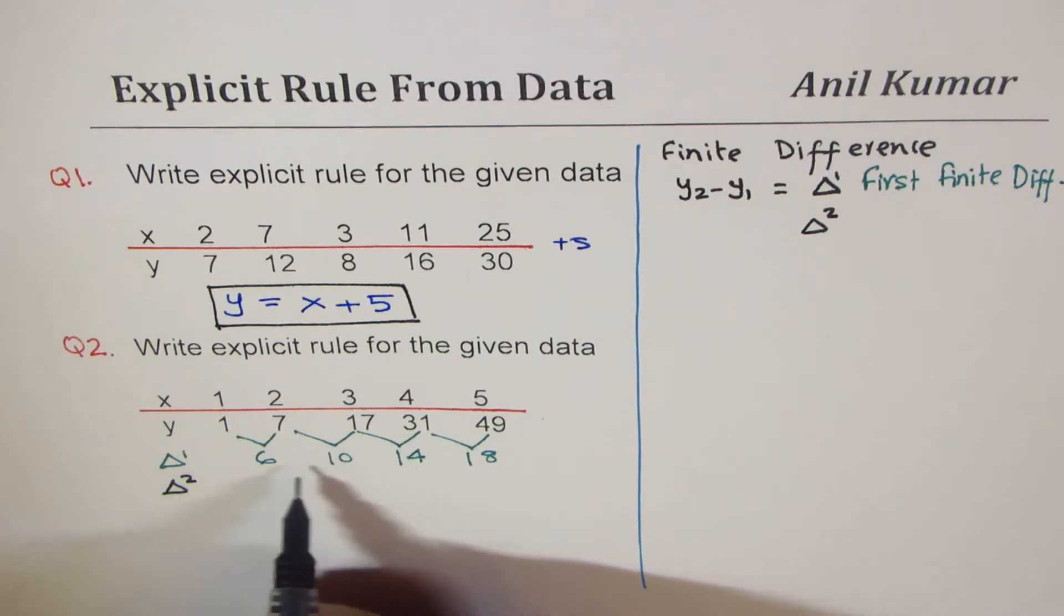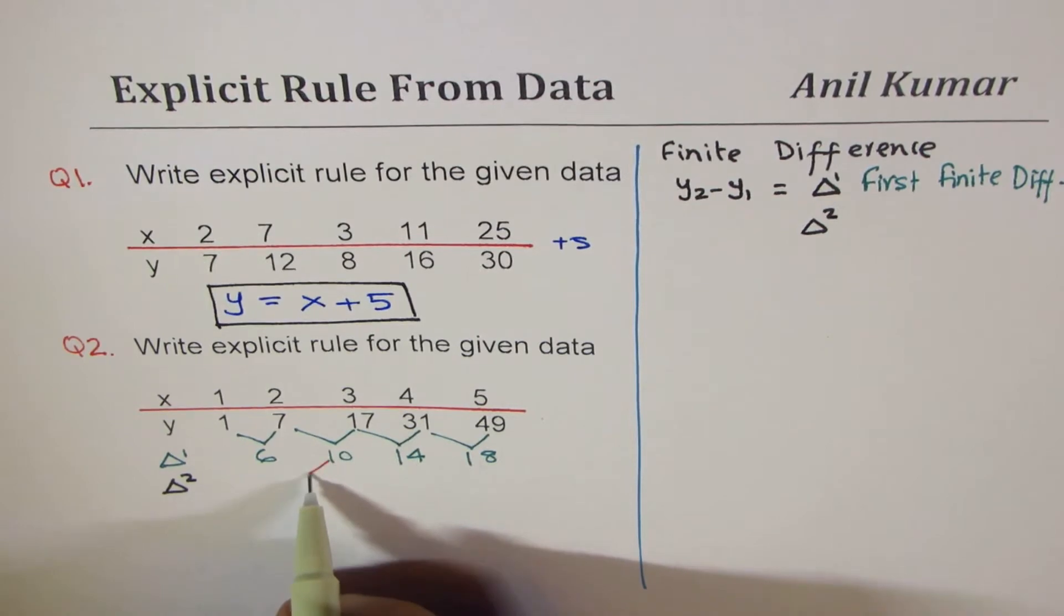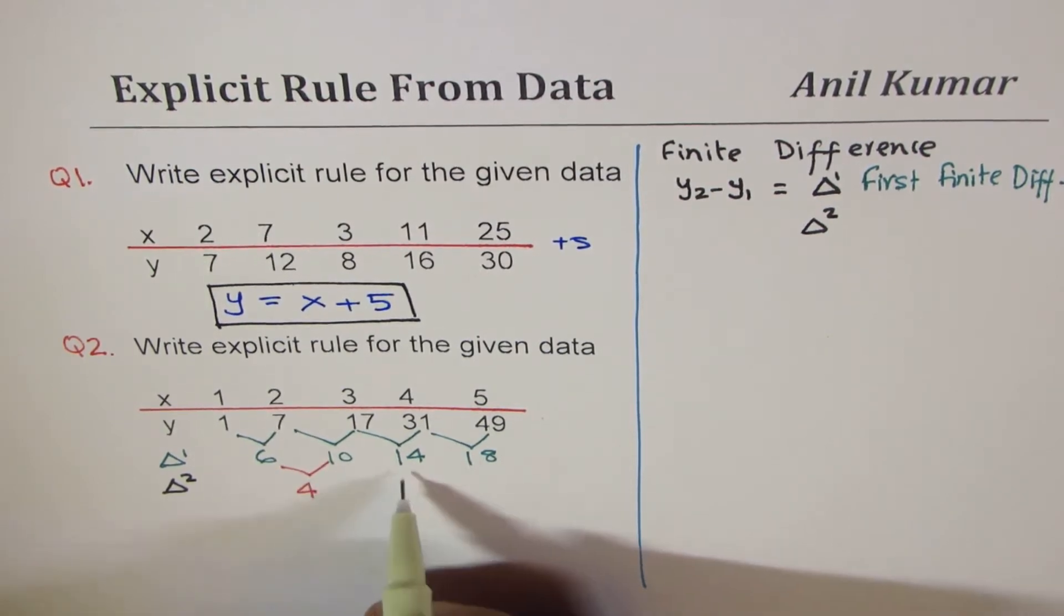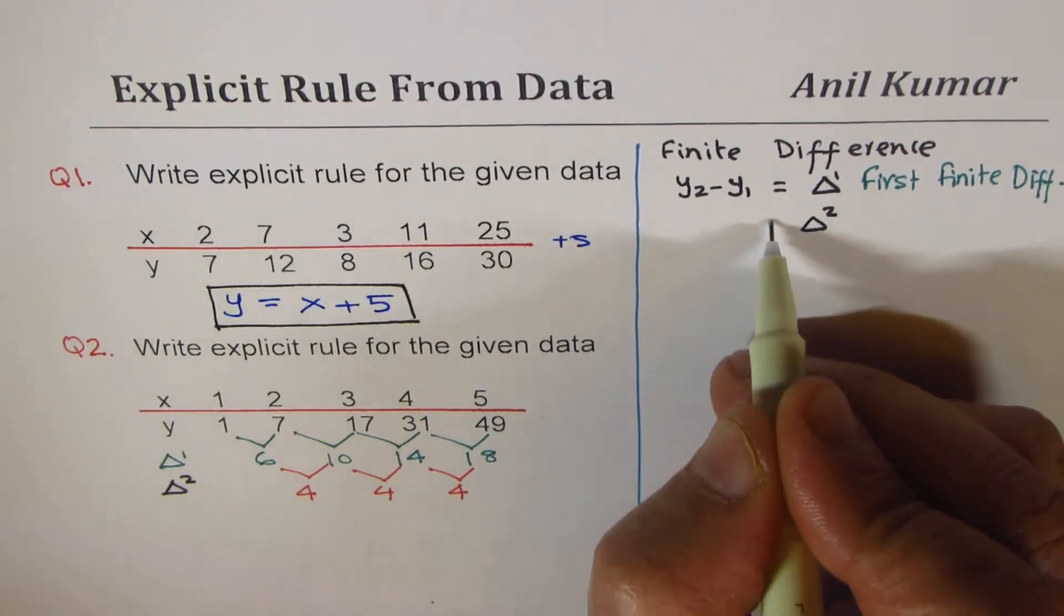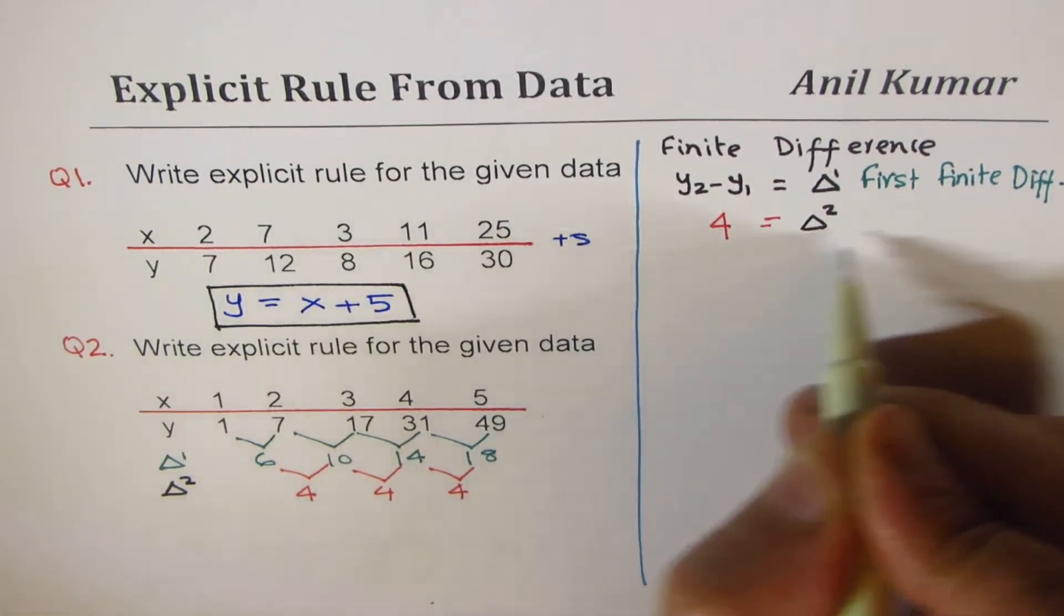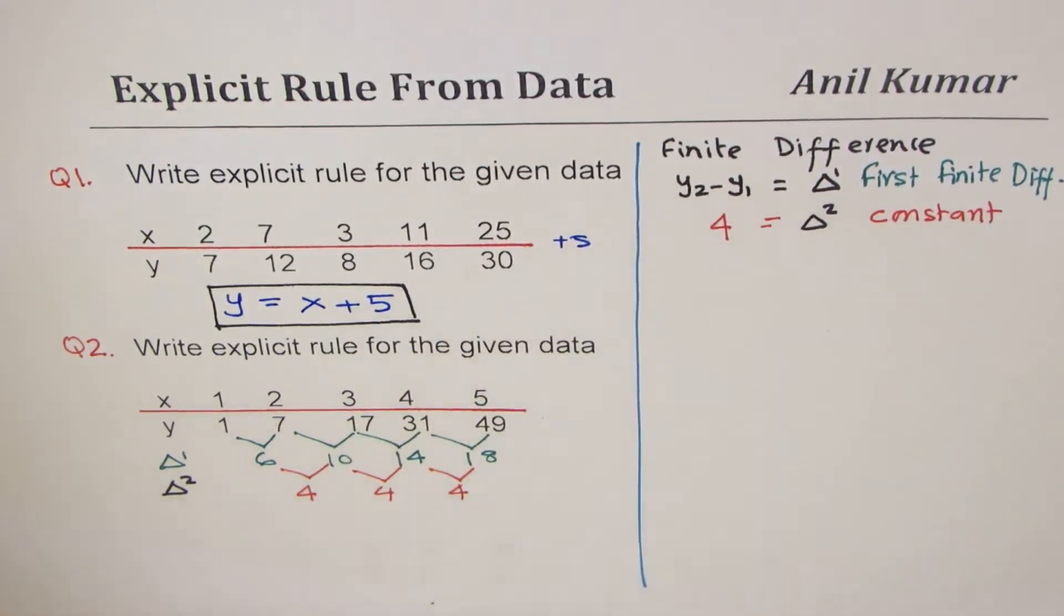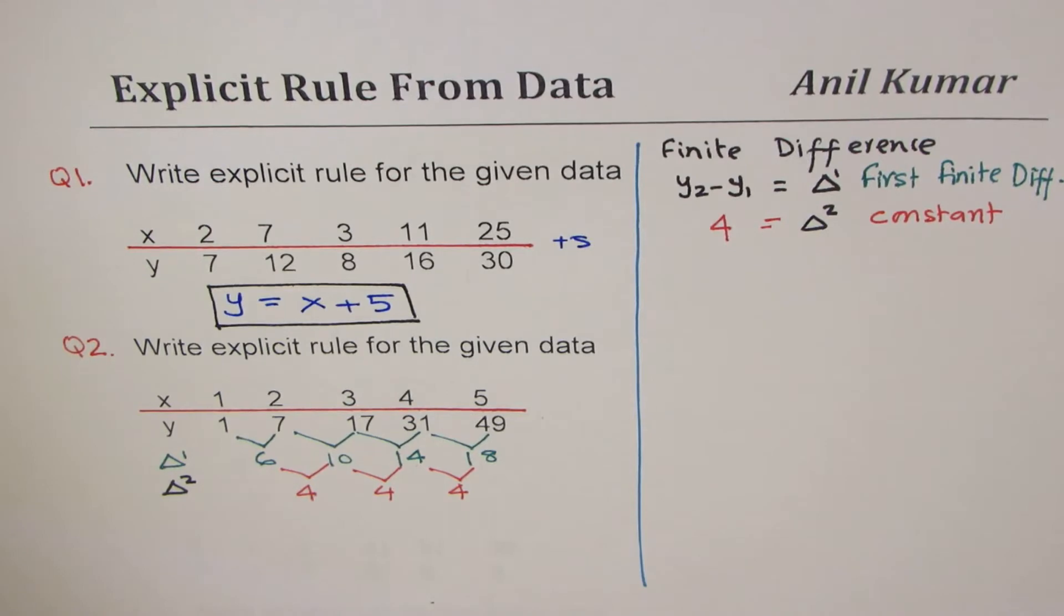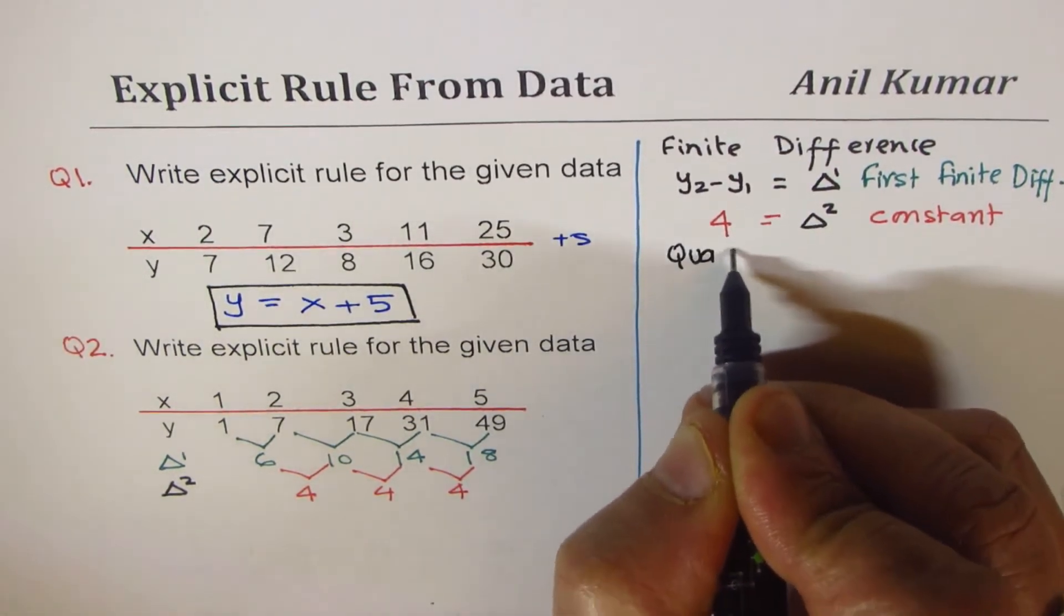We'll find consecutive numbers difference. Now 10 minus 6 is 4, 14 minus 10 is 4, 18 minus 14 is also 4. So second finite difference is constant for us. Since it is constant, we know that we are working with a quadratic function.